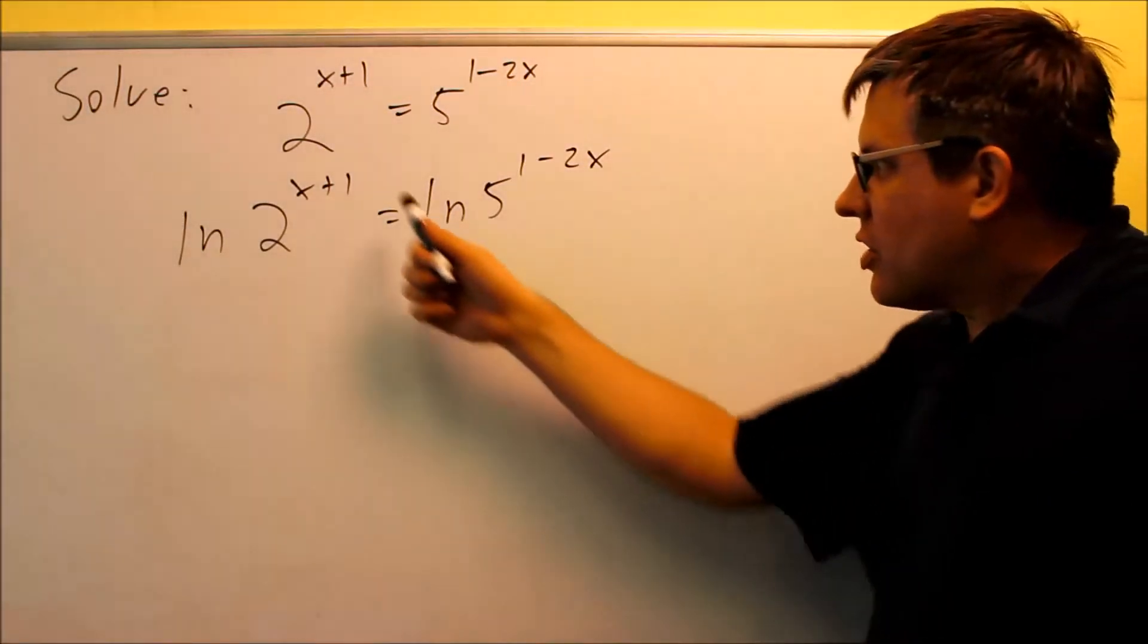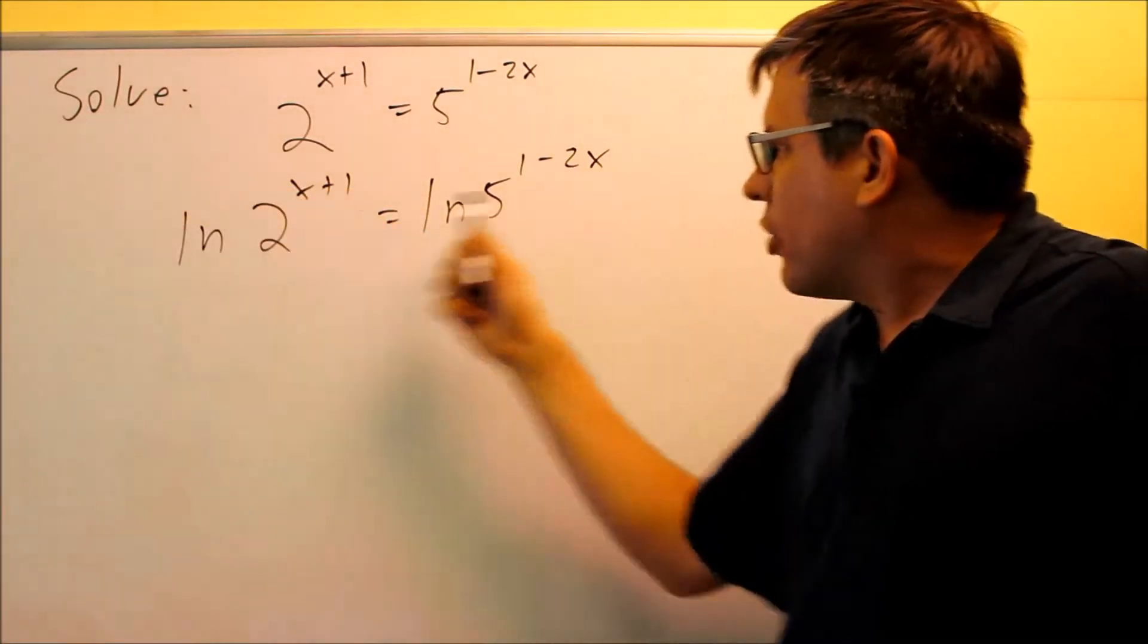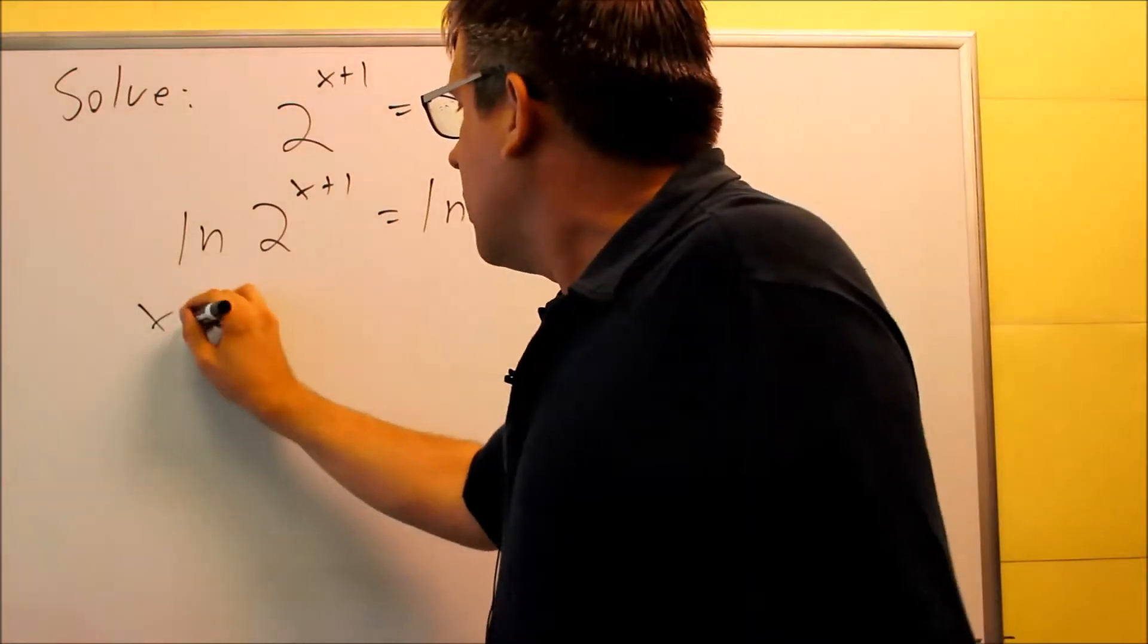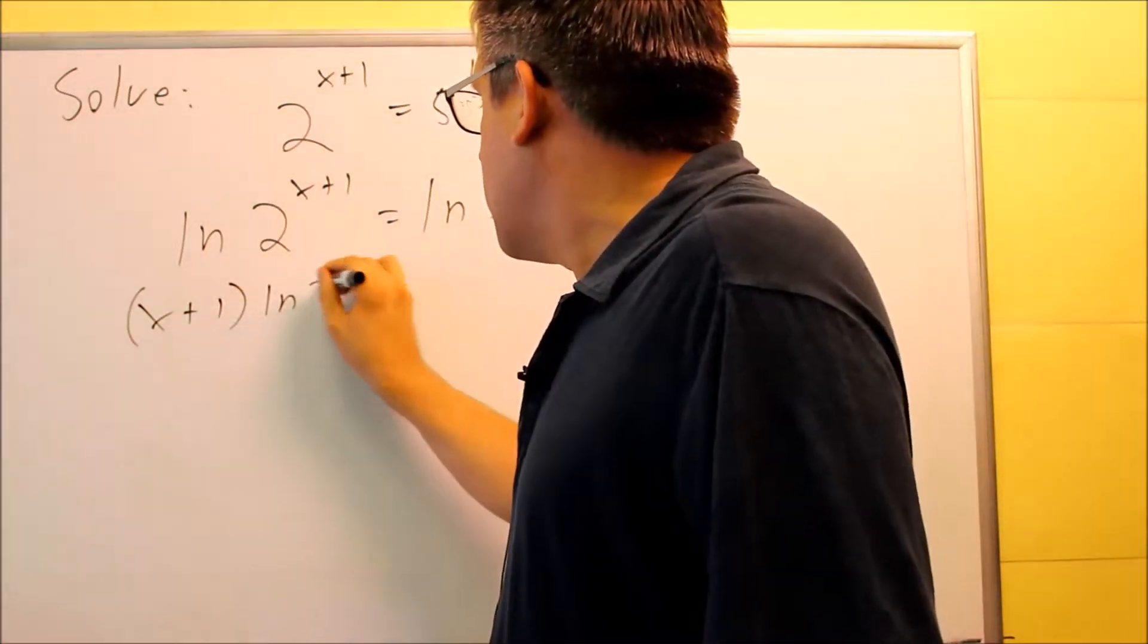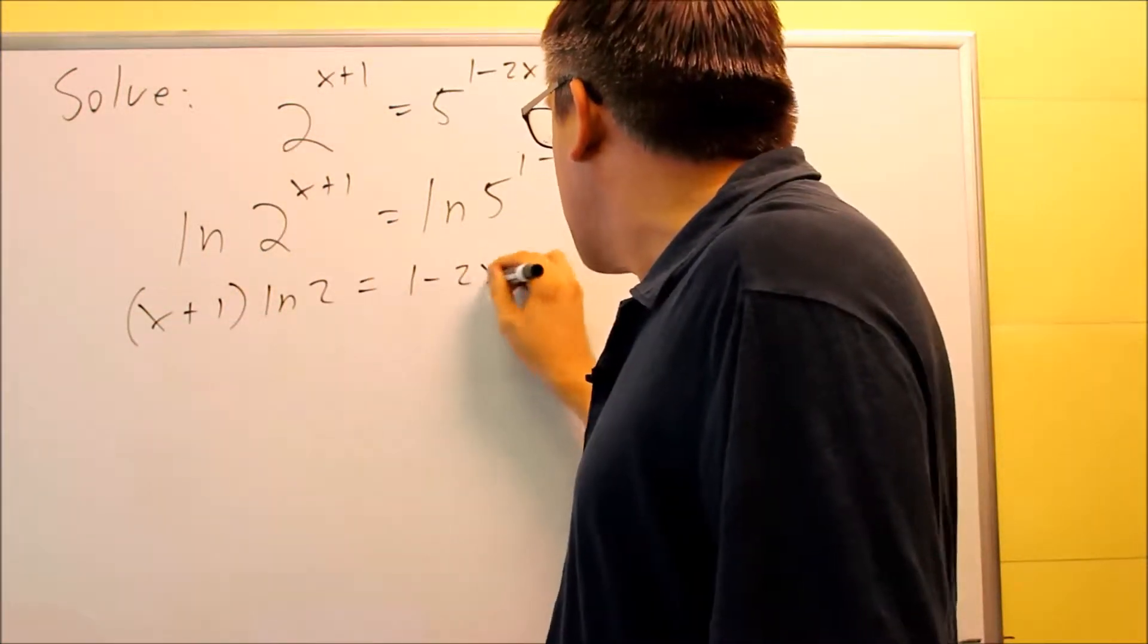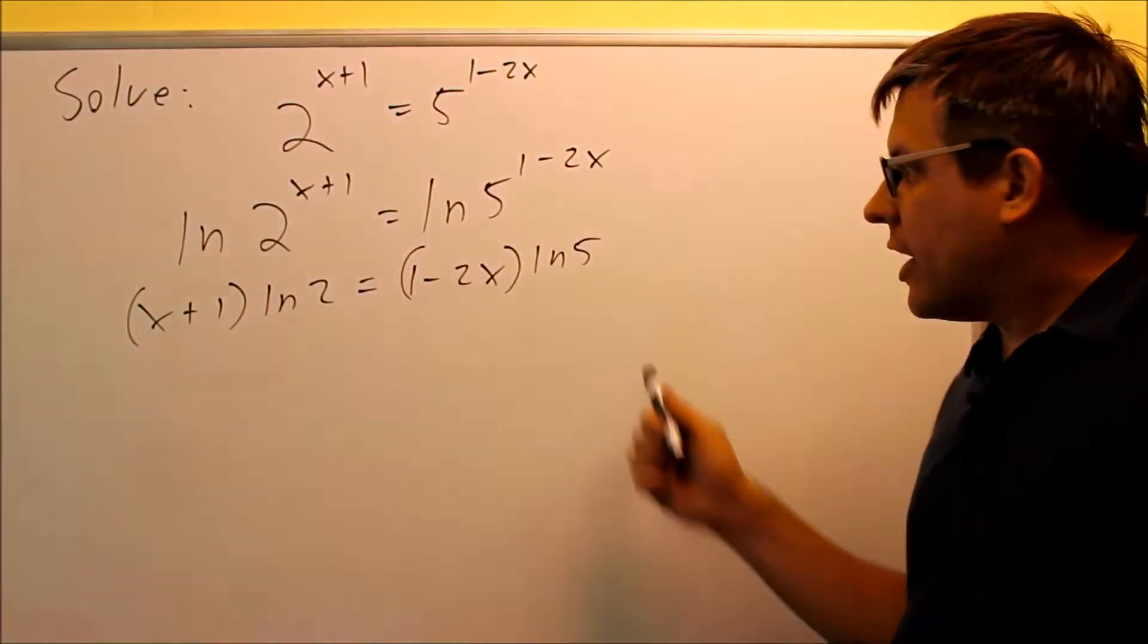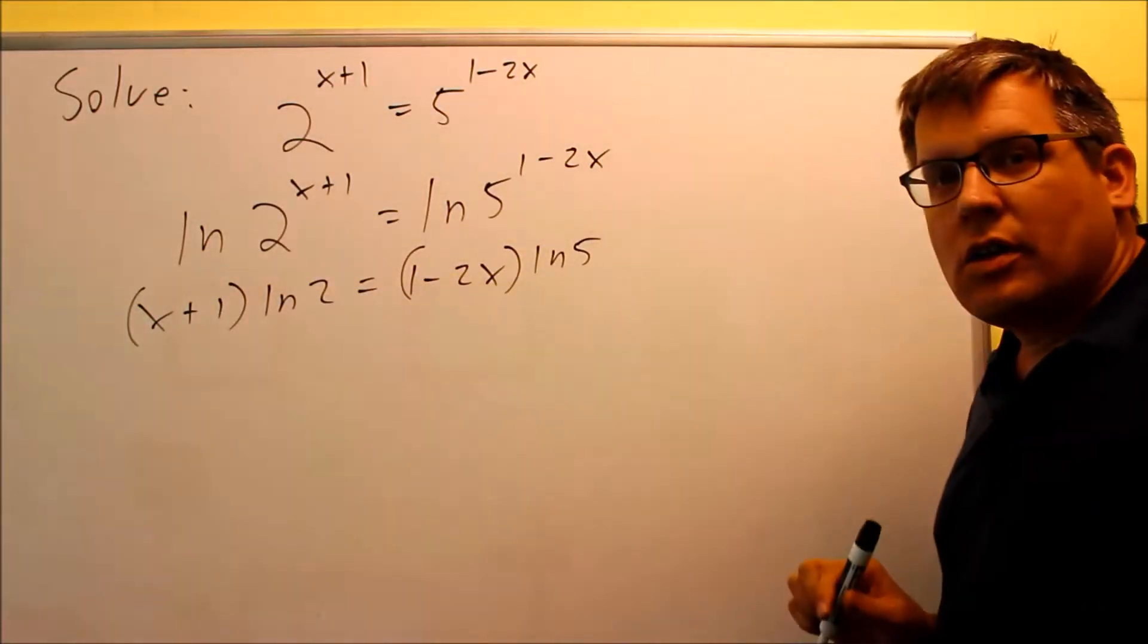By doing that, it allows us to take the whole entire exponent and bring each of these down in front of the log. So (x+1) times ln 2 is going to equal (1-2x) times ln 5. So now I brought the exponents down in front.